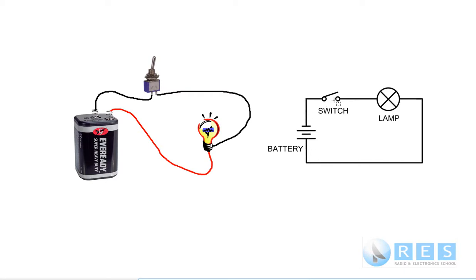Electrons will flow through the switch, through the lamp, lighting up the lamp, and then back to the positive terminal of the battery. The only purpose so far is to demonstrate how important it is to use schematic symbols rather than pictorial diagrams. Pictorial diagrams are fine for very simple circuits, but as circuits become more complicated, we rely more and more heavily on circuit symbols.